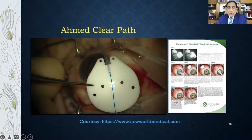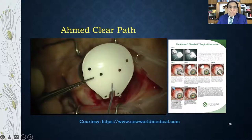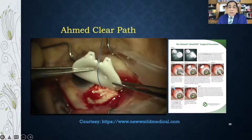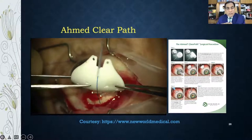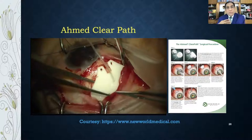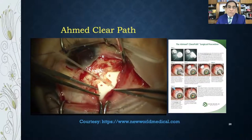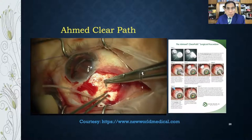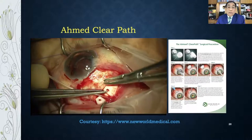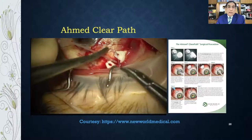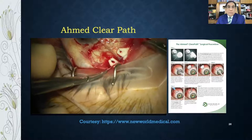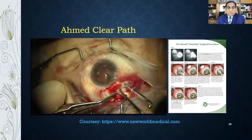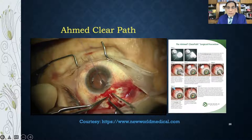The Ahmed ClearPath is not yet available in our country, but it is a very good device. It has a small, flexible plate that does not require placement under muscle cover — just placed between two muscles. It comes with a built-in ripcord suture. The procedure is similar: anchor the plate, ligate the tube, and enter the anterior chamber with a 23-gauge needle.